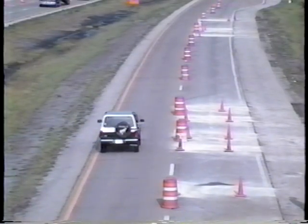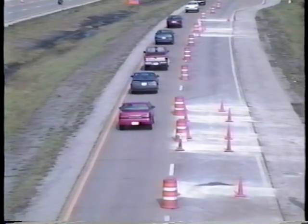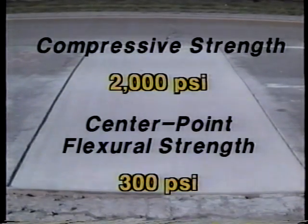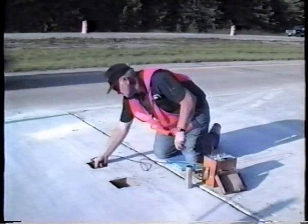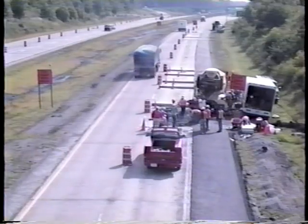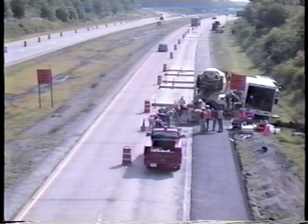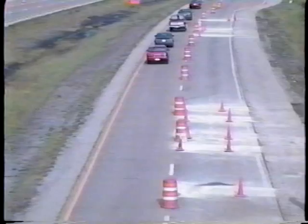That completes the repair procedure. All that remains is to wait until the concrete has reached adequate strength for opening to traffic. Adequate strength is based on either the compressive strength or the flexural strength at the time of opening — either a compressive strength of 2,000 PSI or a center-point flexural strength of 300 PSI is frequently used as the criterion. The concrete strength can be determined either by direct strength testing or non-destructive testing procedures, such as maturity or pulse velocity. There are many important aspects of performing full-depth repairs on jointed concrete pavements. If you're planning full-depth repairs, consult the user's guide — it provides complete guidelines and guide specifications.